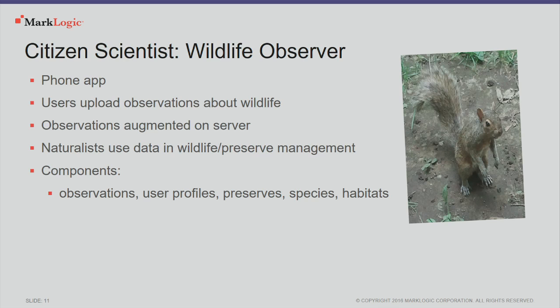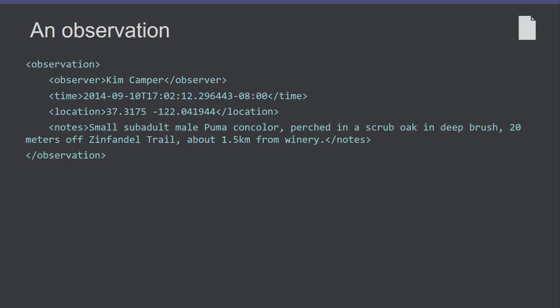This is sort of our skeleton — our dictionary of Proto-Indo-European for search. We have these various kinds of relations among entities. What we're going to look at is how we can combine these relations and join them together with the various APIs that MarkLogic provides to get from here to there. I'm going to do this in the context of a little citizen scientist application called Wildlife Observer. People have this app on their phone, they go hiking in the Bay Area, they see some interesting wildlife, and they enter a little observation. It gets uploaded to the server, tagged with the time and location, so preserve managers and wildlife managers can use that information to help manage the preserve.